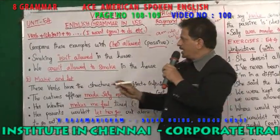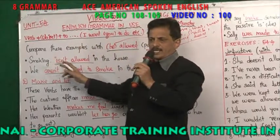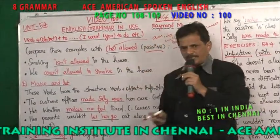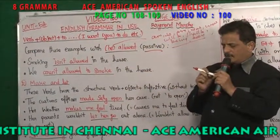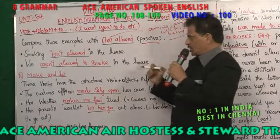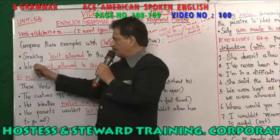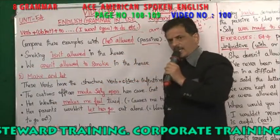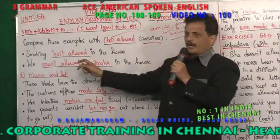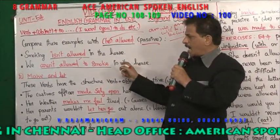'Smoking isn't allowed in the house.' Here 'is' is the auxiliary verb and 'allowed' is the past participle — so it is a passive sentence. 'We aren't allowed to smoke in the house.' Since 'smoking' is singular we use 'is'; 'we' is plural so we use 'aren't'.